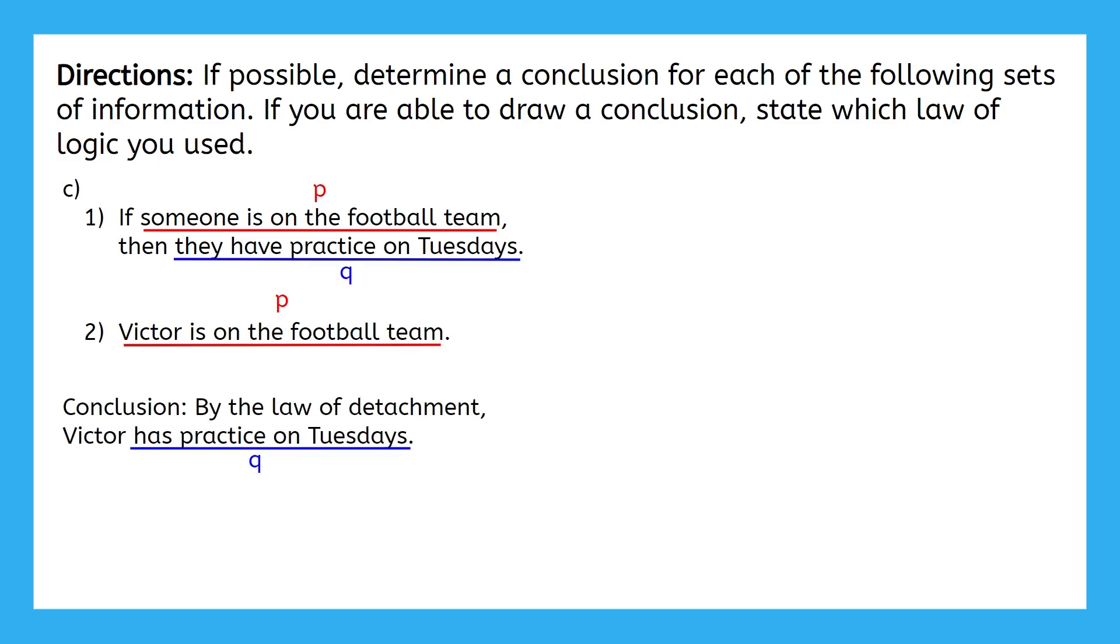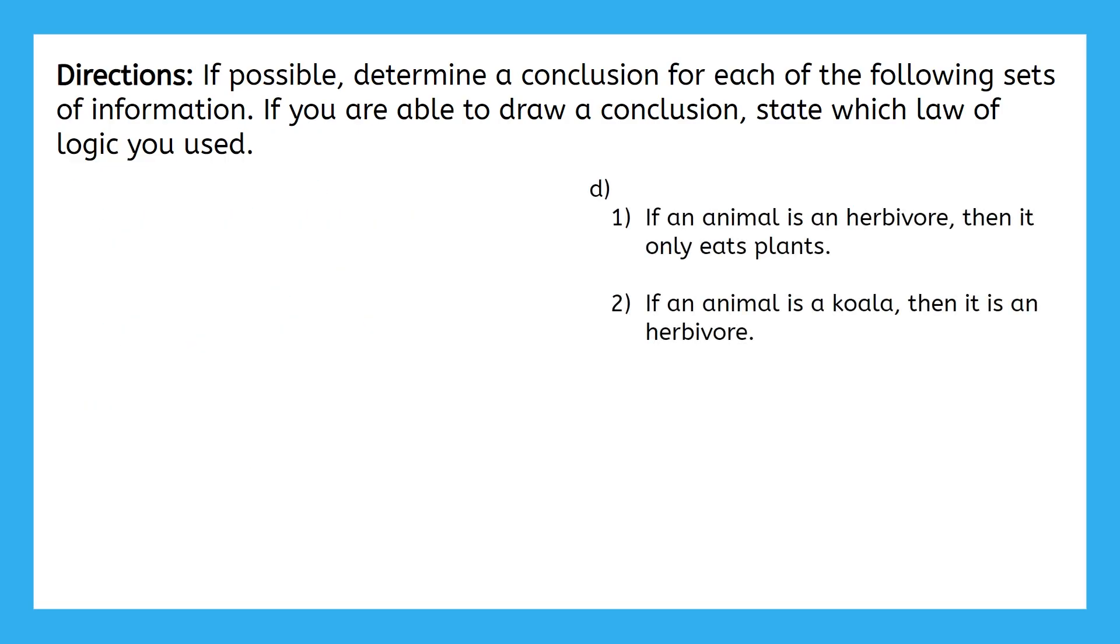We have one last part to complete. Go ahead and finish off with part D. Hmm. This is interesting. I have P implies Q and R implies P. Well, that's not quite right for what we've seen from the law of syllogism so far. But I do have P, Q, R and there's a part that's shared between the two statements. So, let's play around with this before we count it out.